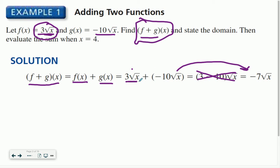So then I can see I have the same radicand, the square root of x, so I can combine these terms. So 3 plus negative 10 is negative 7. So I found what (f + g)(x) is.